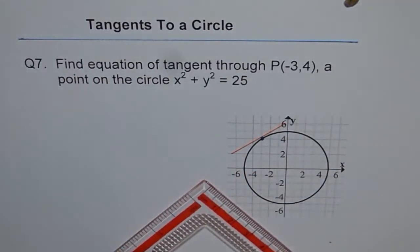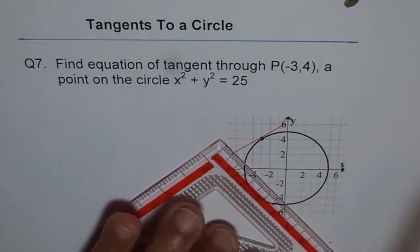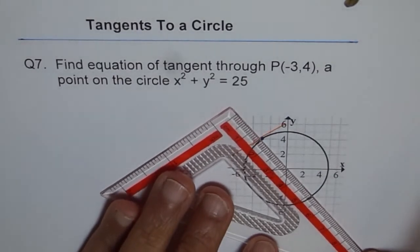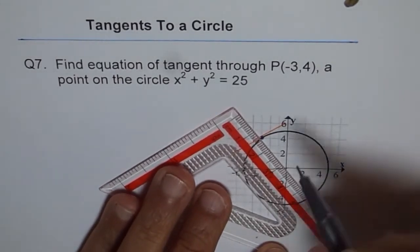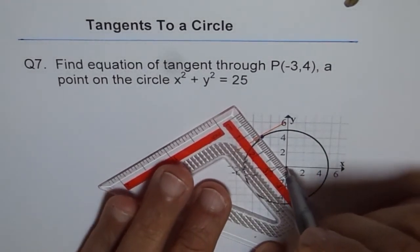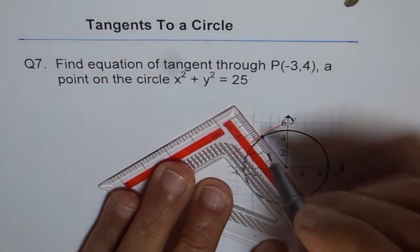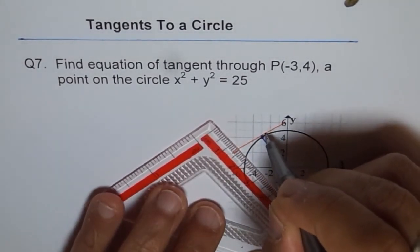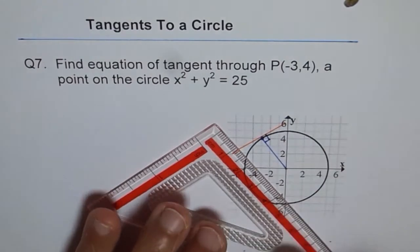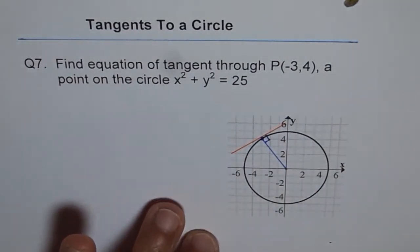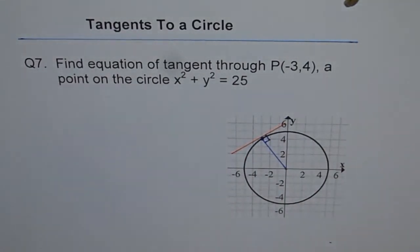As you know, a tangent to a circle will always be perpendicular to the line joining with the center. So if I join that point with the center, then this tangent and this line will be perpendicular. So radius and tangent are always perpendicular. And we are going to utilize this property to find equation of the tangent line.